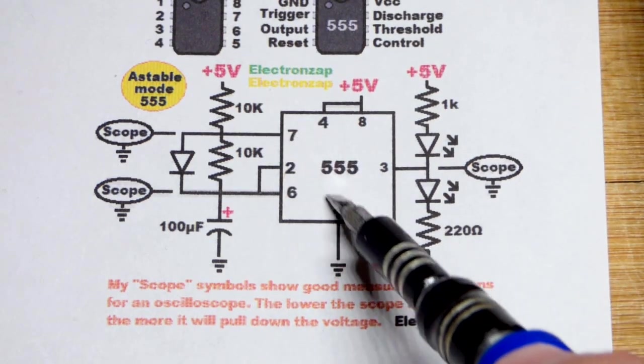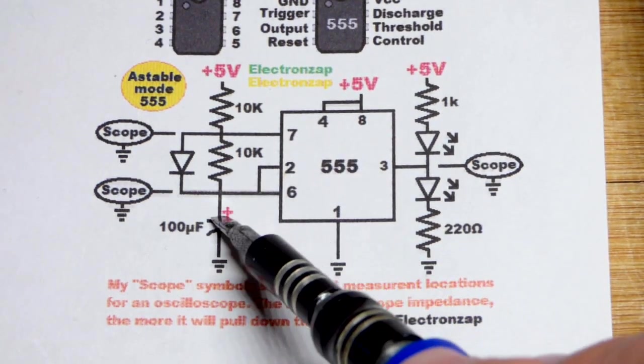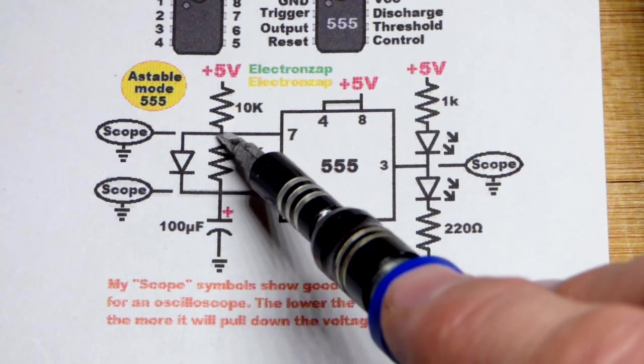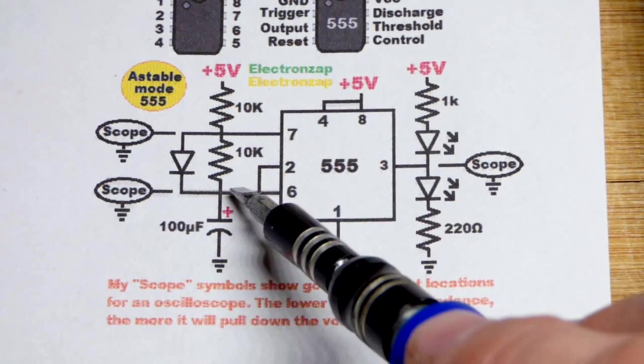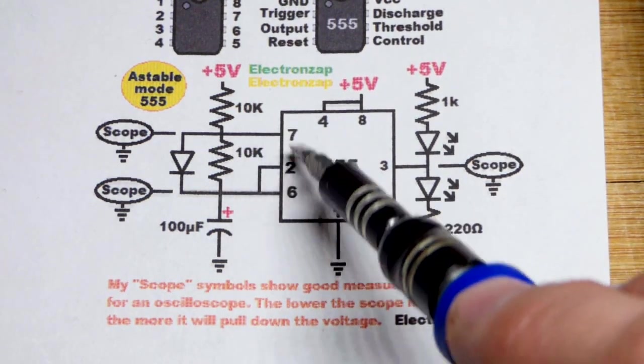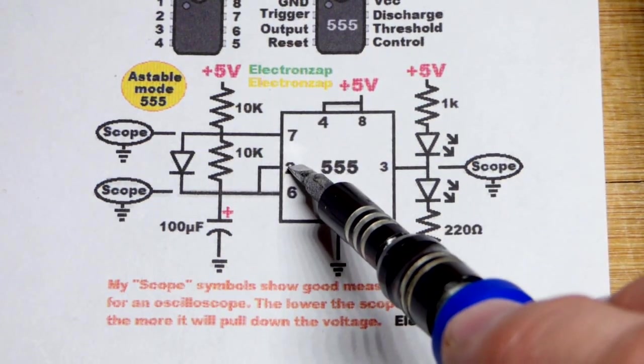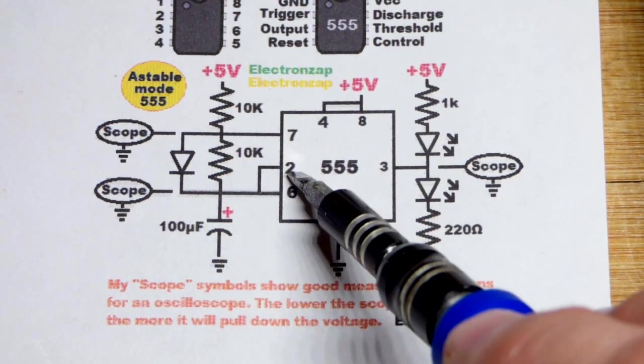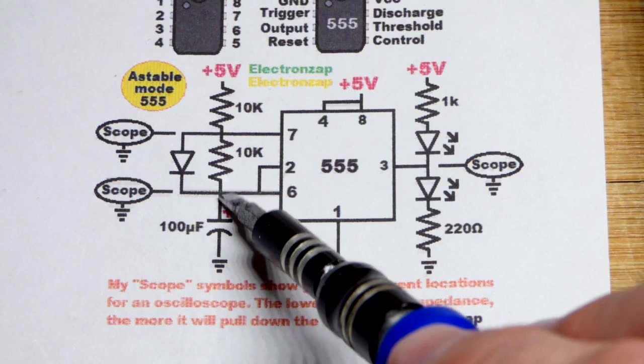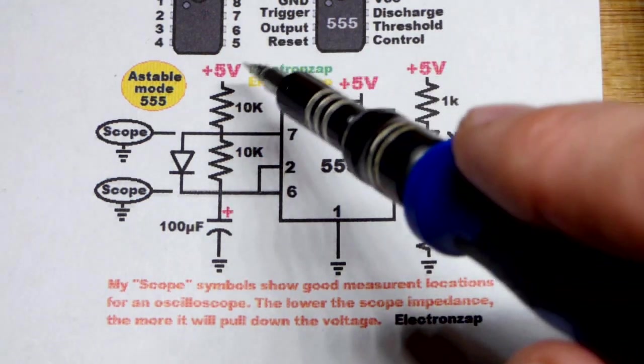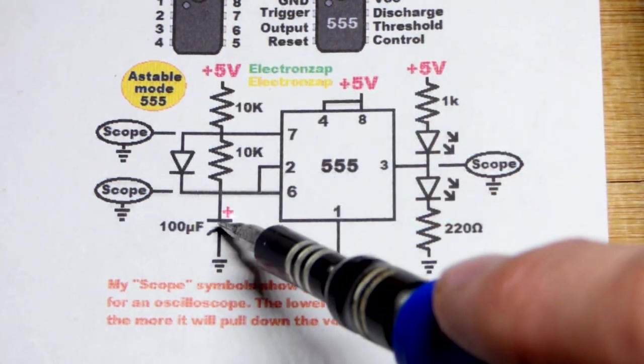Then pin 7 connects to ground, as we saw earlier. That discharges the capacitor through the resistor there because it cannot go through the diode, which is reverse biased at that point. It discharges until pin 2 sees one-third of the supply voltage. Once that happens, pin 7 stops discharging and the capacitor starts charging again.